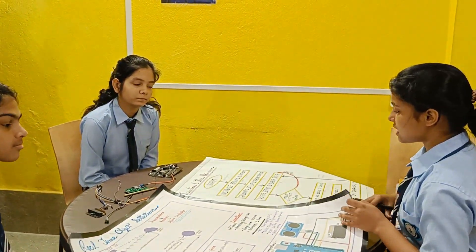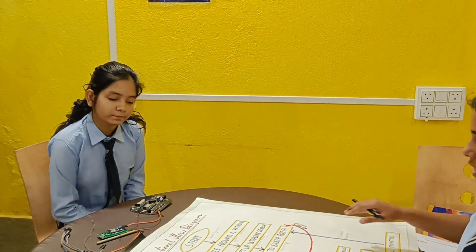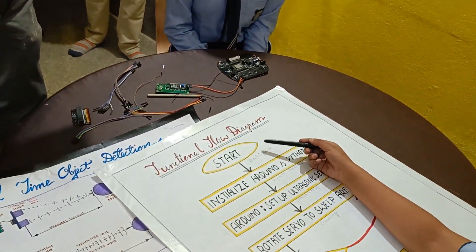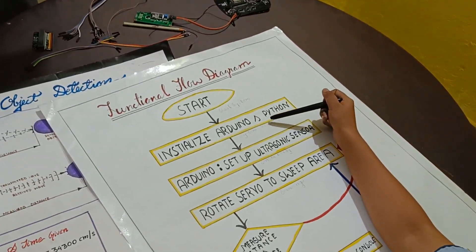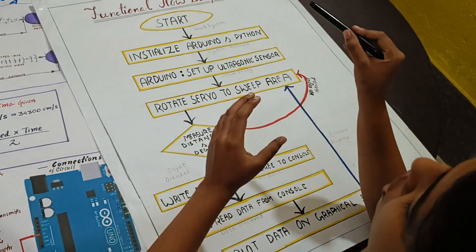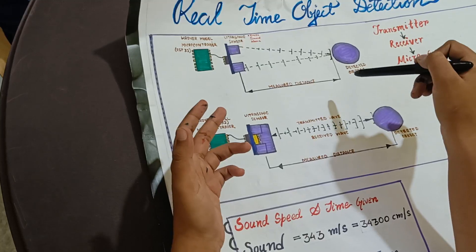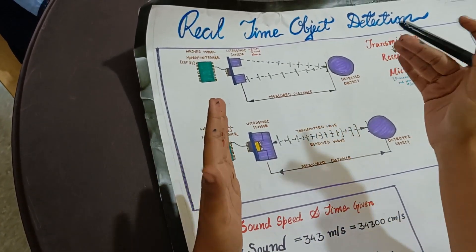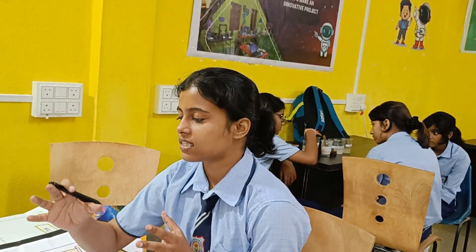I will firstly explain and give a summary of the project using this flowchart. This is the functional flow diagram. Once the system is started, the Arduino's Python programming is initialized and then the ultrasonic sensor is set up to the initial position. The time taken between the sending of the signal and receiving of the signal is very accurately detected with a plus or minus three margin, and with the help of the given formula shown earlier, it detects the object and distance accurately.